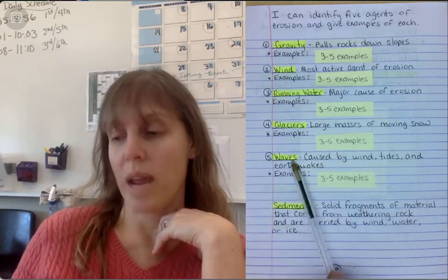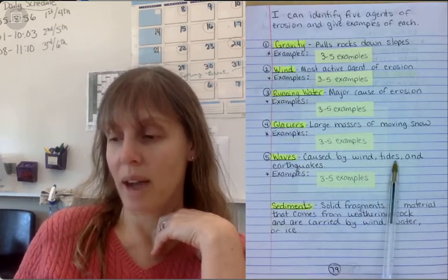The last one is waves. Waves are caused by wind and tides and earthquakes. And I want three to five examples of erosion by waves.